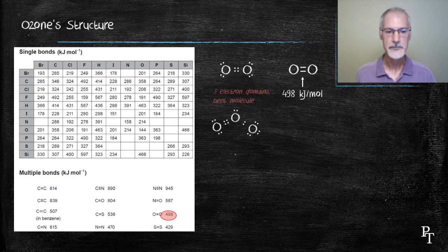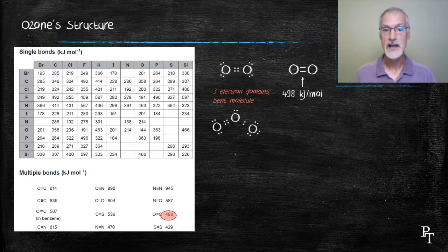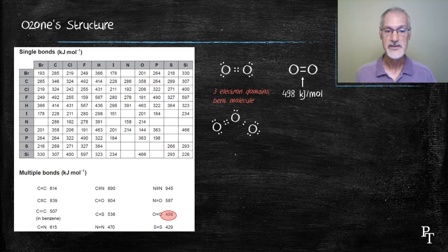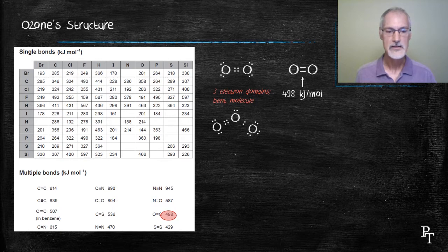Here's the structure of ozone. It has three electron domains, indicating that those domains form a flat triangle at about 120 degrees. The presence of the one unbonded pair distorts that 120 degrees, reducing it somewhat to around 117. So ozone is a bent molecule.